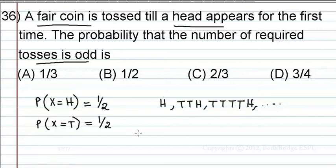Therefore, probability that he gets odd tosses is: First, head to appear is 1/2, so I wrote 1/2. For tail-tail-head, 1/2 times 1/2 times 1/2, which is (1/2)³.